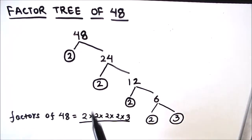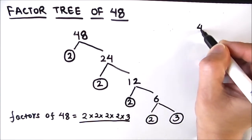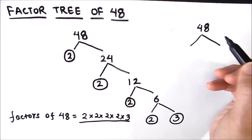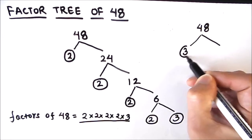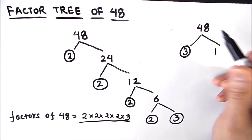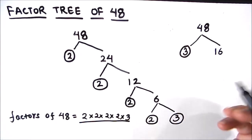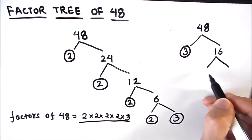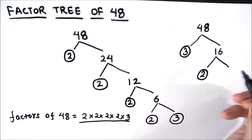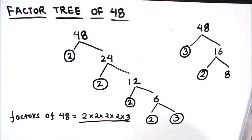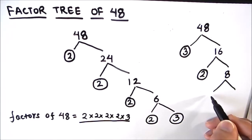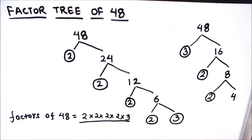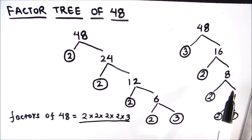Let's make one more factor tree for 48. This time we are going to divide 48 by the prime number 3, since 3 times 16 is 48. Now 16 is an even number; we can break it down into 2 and 8, since 2 times 8 is 16. Then 8 can be written as 2 times 4, and 4 can be broken down into 2 times 2. This is another way of making the factor tree for 48, and here too we get the same prime factors. This is how we draw the factor tree for any number.